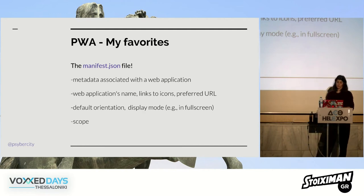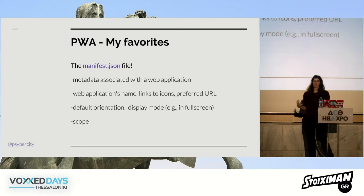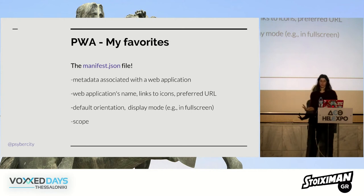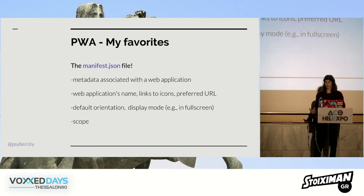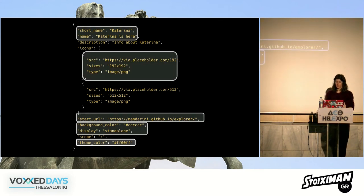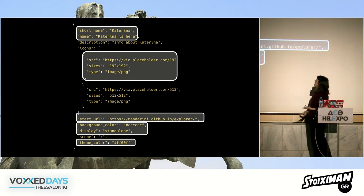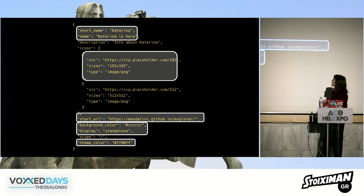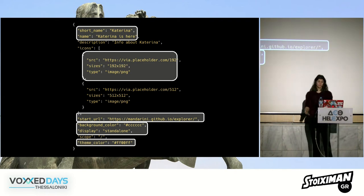A first step is to add a manifest.json file. It contains metadata associated with the web application: the app's name, a description, links to icons for the home screen, the preferred start URL, default orientation, display mode — whether you want full screen — whether you want the URL bar, and a scope for your application. For my application, the necessary manifest fields for a PWA are: short name, name, icons at least 192 pixels square, a start URL, background color, display, and theme color.